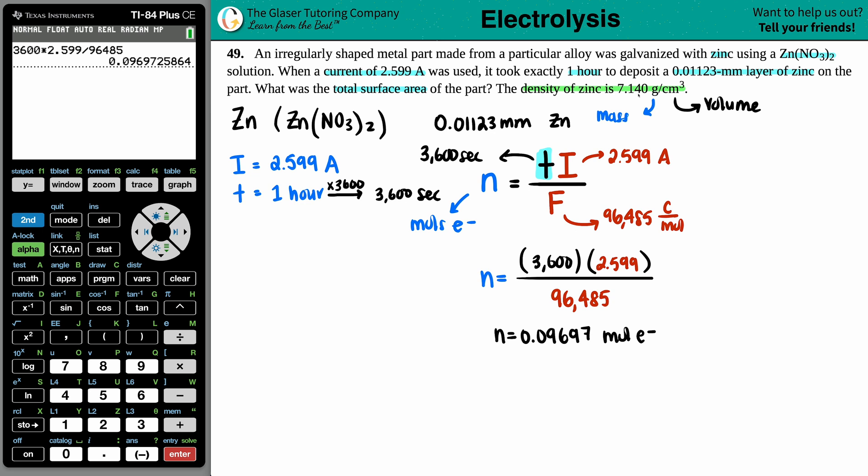So let's plug this onto the calculator. 3,600 times 2.599 divided by 96,485. Let's press enter. And here are the number of moles. So I have n which equals 0.09697, we'll call it. That's the amount of moles of electrons. But now I still want to get to zinc because in order to use this density formula, I have to have moles of zinc or at least some form of zinc. So I have to convert moles of electrons. So we got to make the balanced equation.